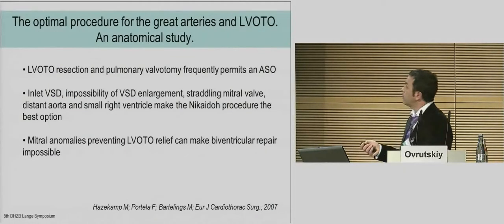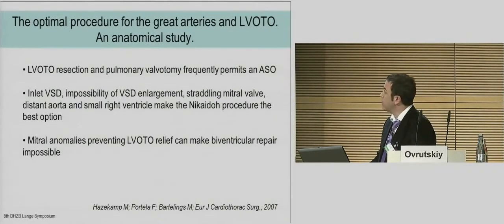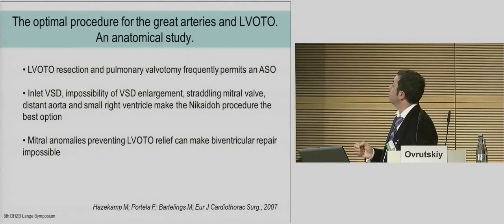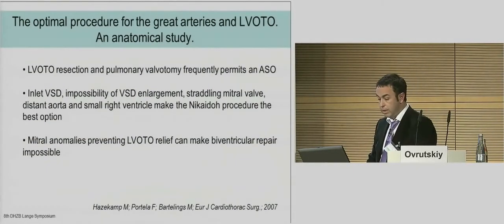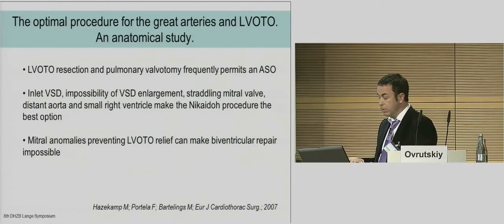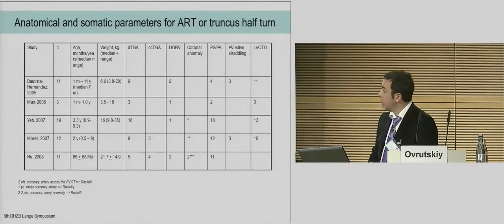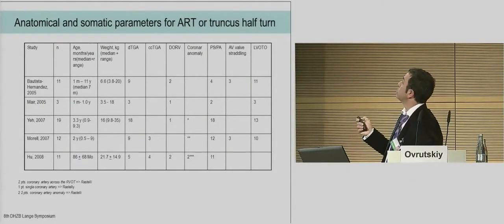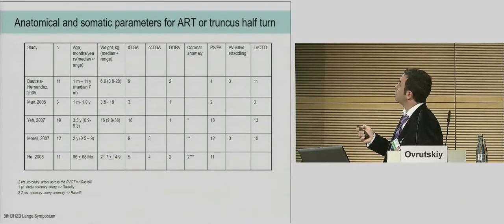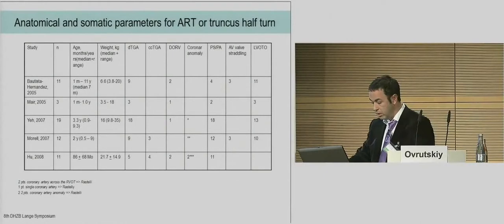This publication states that resection of left ventricular outflow tract obstruction and pulmonary valvotomy permits the arterial switch operation. However, complex types of VSD can make the Nikita procedure the best option, and some patients have no possibility for VSD repair. In five publications on aortic root translocation, patients had low age, all possible anatomic types, coronary anomalies, or outflow obstruction, but VSD correction was possible in all cases.